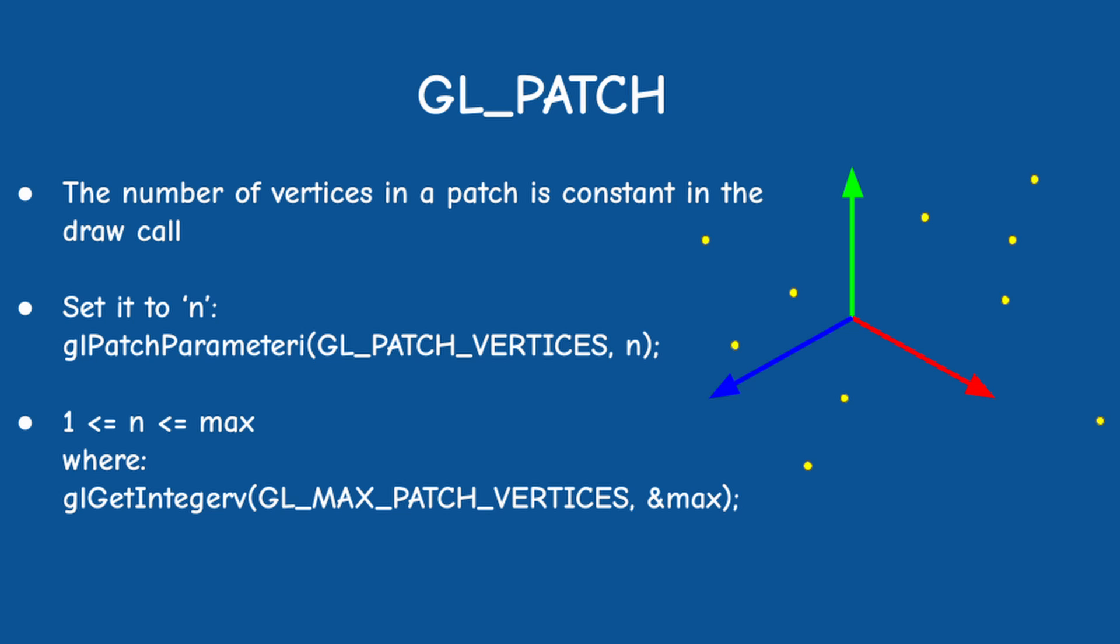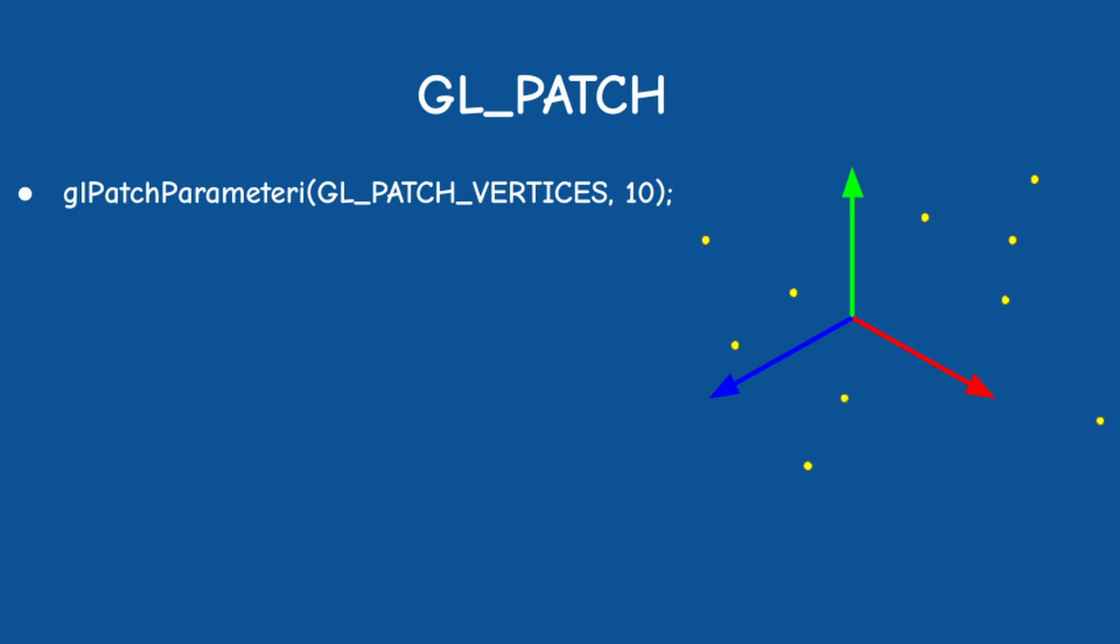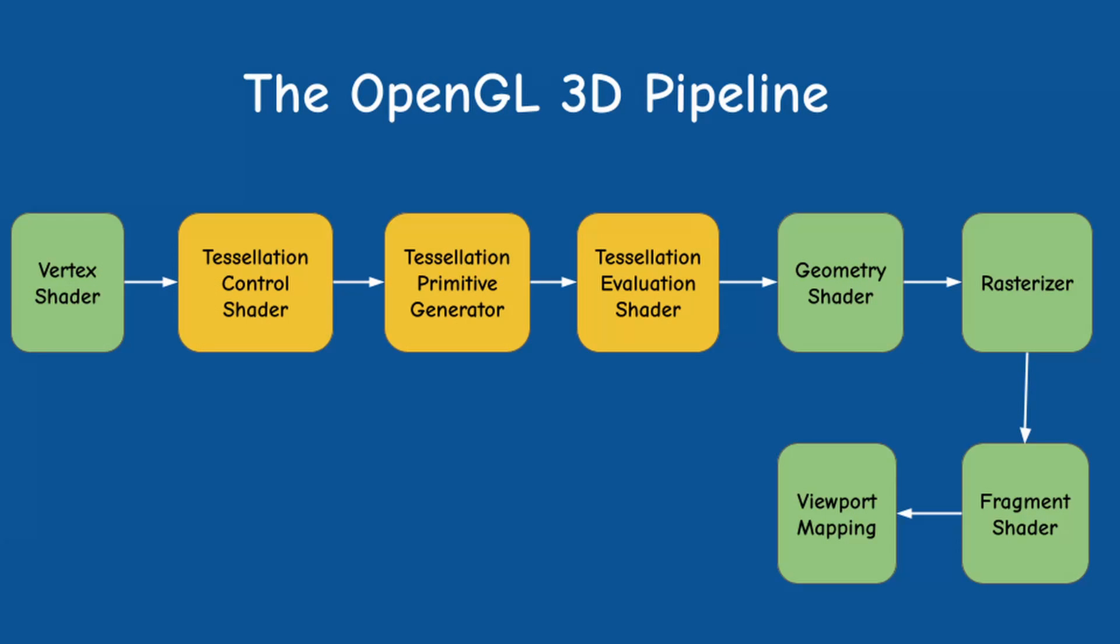This number must be between 1 and a value which can be queried using GL_PATCH_VERTICES. The maximum is implementation dependent but has to be at least 32. For example if we set GL_PATCH_VERTICES to be 10 and call glDrawArrays on 100 vertices the system will execute the tessellation process on 10 patches. Notice that the patch doesn't go all the way until the end of the pipeline so it's not something that the rasterizer needs to understand. We will talk about the final shape a bit later.